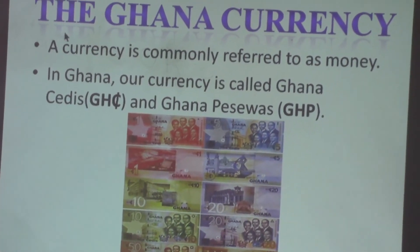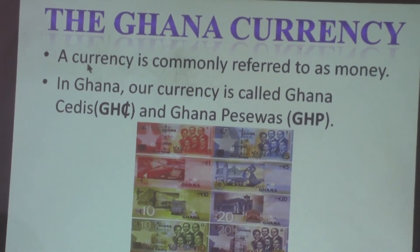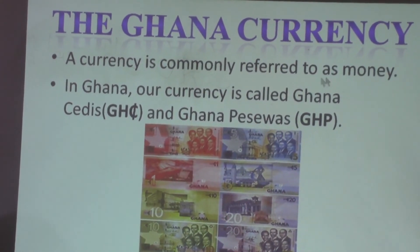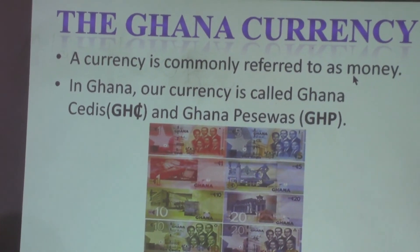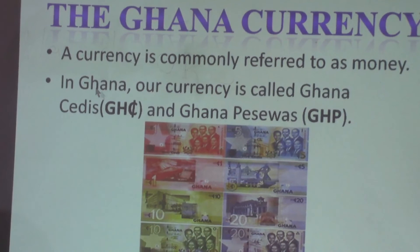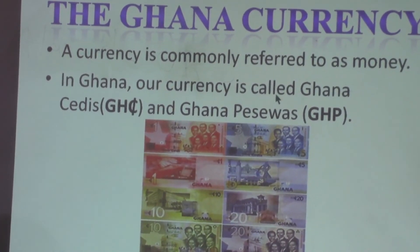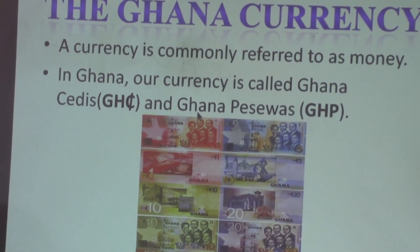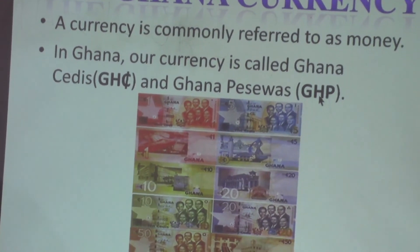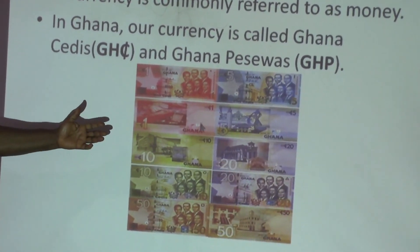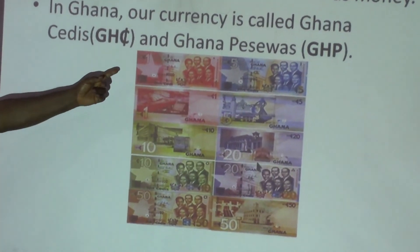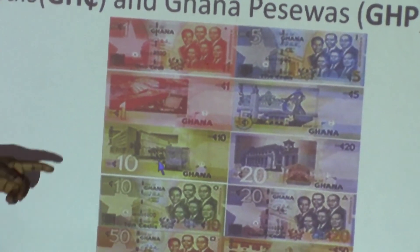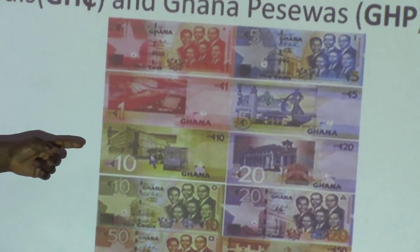The Ghana Currency. A currency is commonly referred to as money. In Ghana our currency is called Ghana Cedis. Here are the denominations of the currency: one Ghana Cedi, five Ghana Cedis, and ten Ghana Cedis.